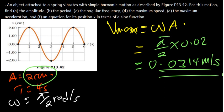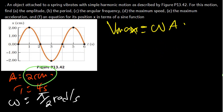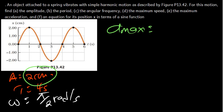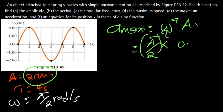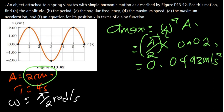For the maximum acceleration, the formula is a_max = ω² × A. We square the angular frequency (π/2)² = 2.4674, then multiply by the amplitude 0.02. This gives us a maximum acceleration of 0.0493 meters per second squared.